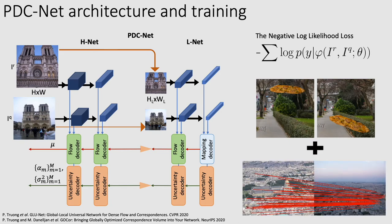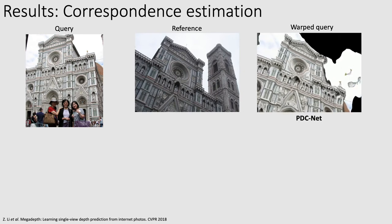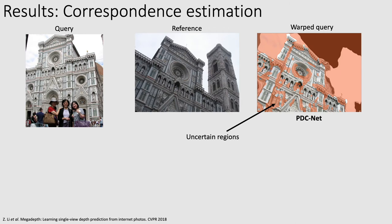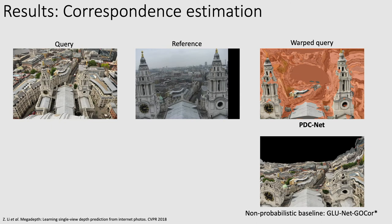Now let's look at the results. We first show qualitative results on scenes from MegaDepth. This is the warped query according to PDCNet, and the unreliable regions are shown in red. To compare, we also train a non-probabilistic network, GluNet GoCore, on the same data. We see that our probabilistic formulation not only allows identifying accurate from inaccurate regions, but it also improves the flow prediction itself. In this other example, we see that PDCNet does very well under extreme appearance and viewpoint changes.